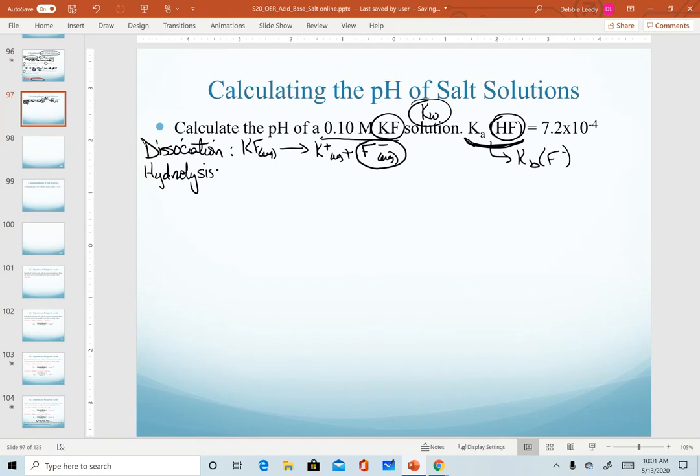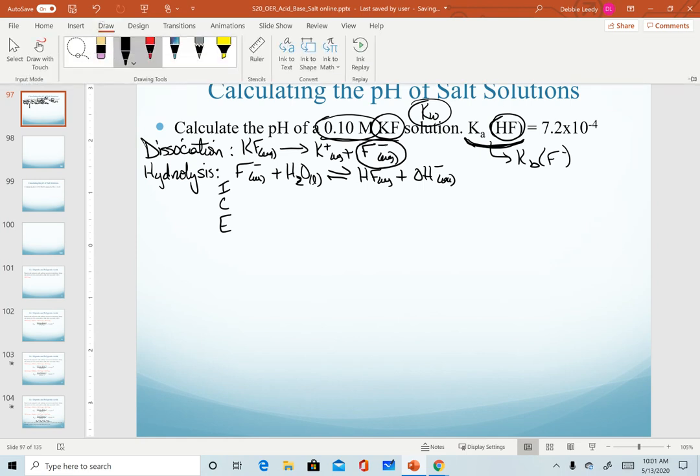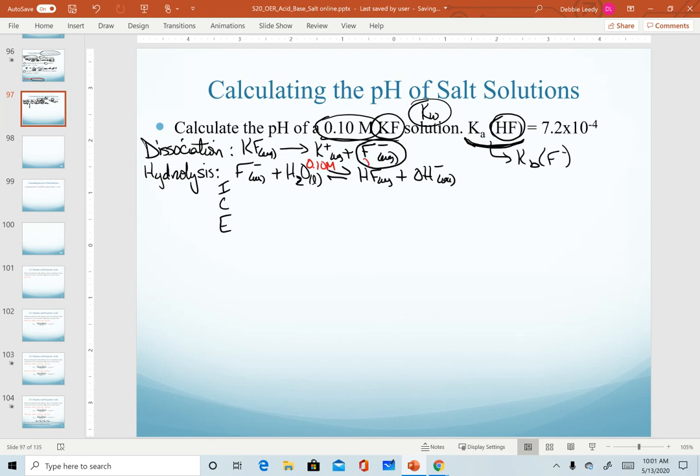Now our hydrolysis equation. We know it's the fluoride ion that will hydrolyze, and hydrolysis equations always set up equilibrium. Because this system is setting up equilibrium, this is where we set up ice tables. I need to know my initial concentration of the fluoride ion. Since my initial concentration of the salt is 0.10, and this dissociates in a one-to-one ratio, I know my concentration of each ion.